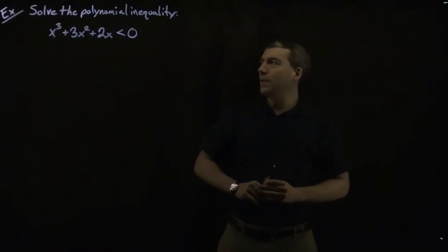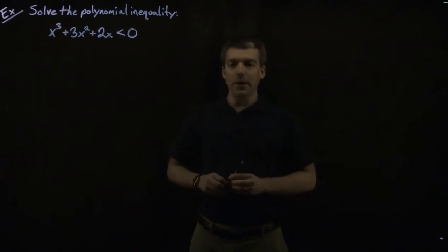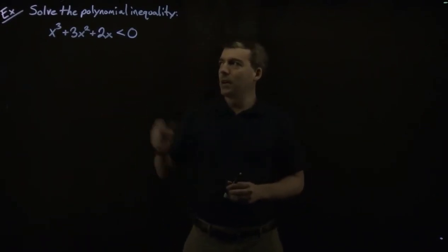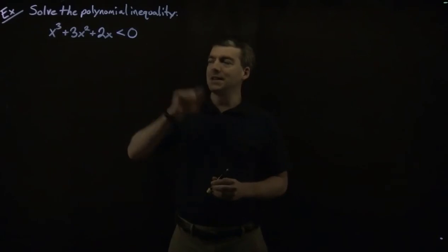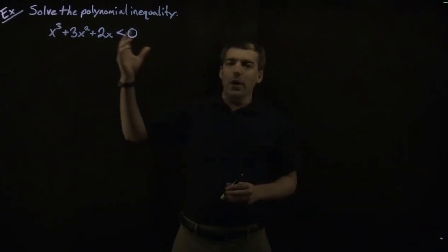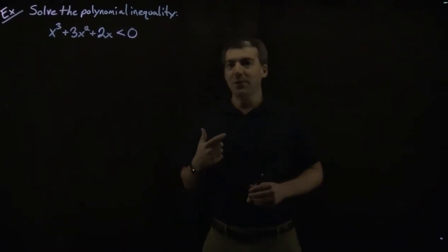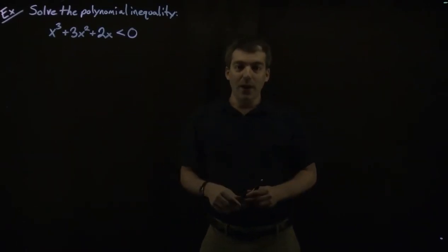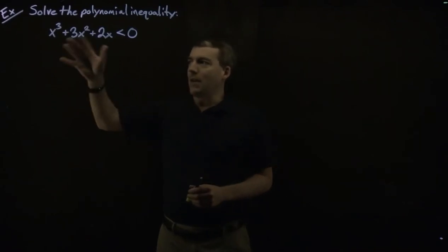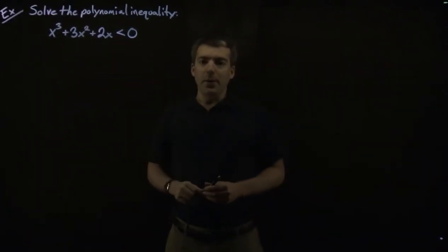Let's look at another inequality. This is solving a polynomial inequality: x cubed plus 3x squared plus 2x is less than 0. The procedure for solving a polynomial inequality is to get everything on one side, and we already have that — we've got 0 on the other side — and now we'll want to factor this polynomial.